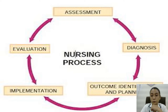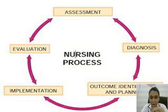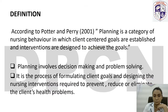This is the nursing process: assessment, diagnosis, outcome identification and planning, then implementation and evaluation. Outcome identification — that is goal and planning. This is all about the nursing process.